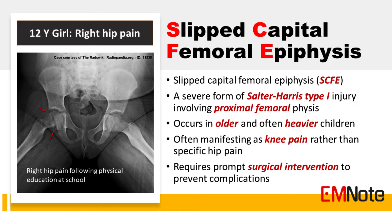Slipped capital femoral epiphysis is a Salter-Harris type 1 injury involving the proximal femoral physis, which results in slippage of the proximal femoral epiphysis in relation to the metaphysis. It occurs in older and often heavier children, often manifesting as knee pain rather than specific hip pain. It is a serious condition that requires prompt consultation and surgical intervention, as delayed treatment can lead to severe complications and long-term hip problems.